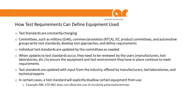Test standards get updated through input from manufacturers, test laboratories, and technical experts. When a committee decides to update something, they request feedback and comments, send out a draft specification, get it reviewed, and then finalize the test standard — usually a lengthy iterative process. In certain cases, committees will remove certain equipment from use. For example, MIL-Standard does not allow the use of circularly polarized antennas.